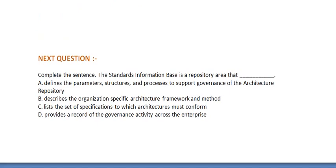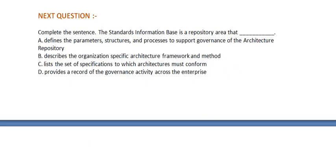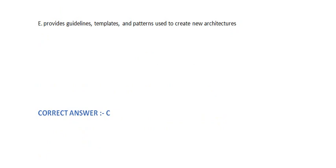Next question: Complete the sentence. The standard information base is a depository area that — Option A: Defines the parameters, structures, and processes to support governance of the architecture depository. Option B: Describes the organization-specific architecture framework and method. Option C: Lists the set of specifications to which architectures must conform. Option D: Provides a record of the governance activity across the enterprise. Option E: Provides guidelines, templates, and patterns used to create new architectures. The correct answer is Option C.